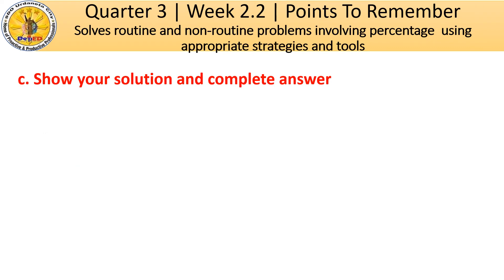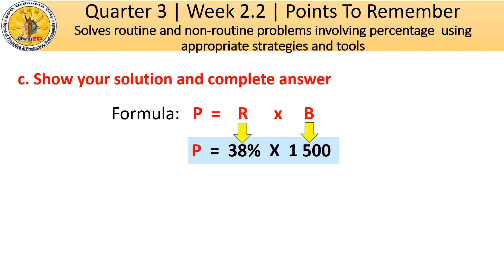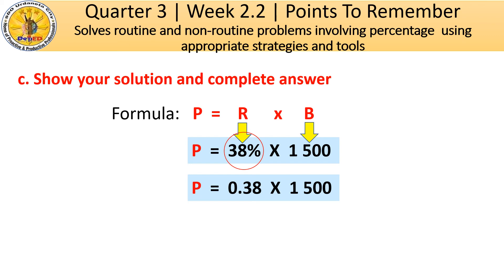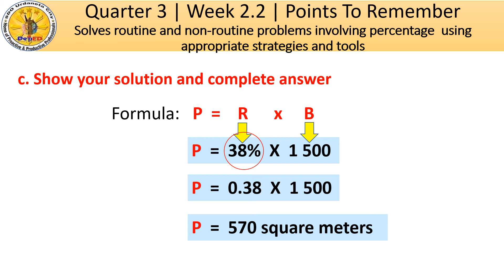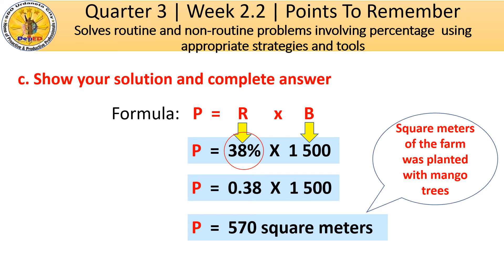We're going to show our solution and state the complete answer. Using the formula in finding percentage, P is equal to R times B, wherein R stands for rate and B stands for base. So we have P is equal to 38% times 1,500. We can change 38% to a decimal number, that is 0.38 times 1,500. So P is equal to 570 square meters of the farm planted with mango trees.